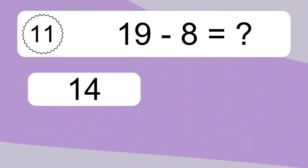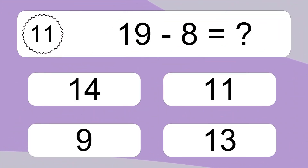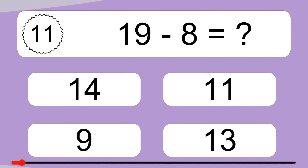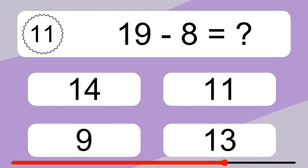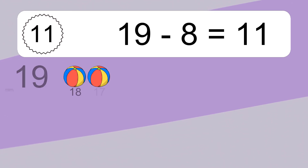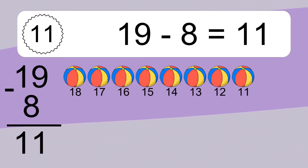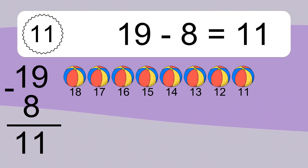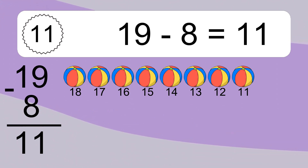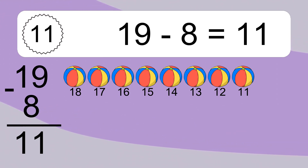19 minus 8 equals what? 19 minus 8 equals 11. Let's count it. 18, 17, 16, 15, 14, 13, 12, 11.